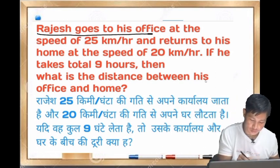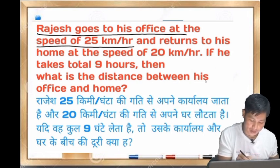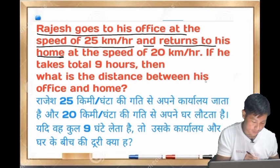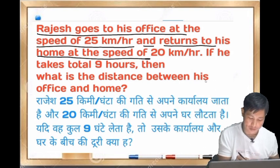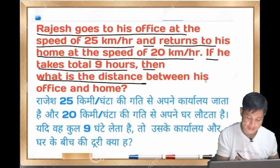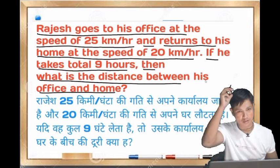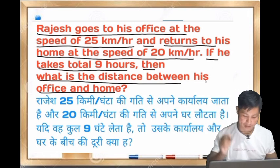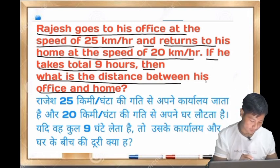Rajesh goes to his office at the speed of 25 km per hour and returns to his home at the speed of 20 km per hour. If he takes a total of 9 hours, then what is the distance between his office and home? Let's look at this question.